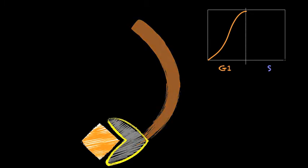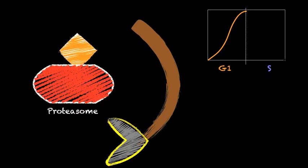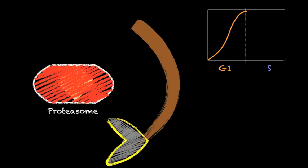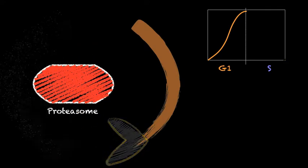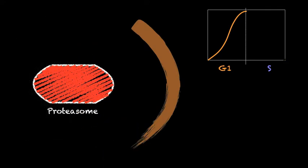Once in a new phase, the complex must then be inactivated, a process that involves the degradation of cyclins via the ubiquitin-proteasome pathway.